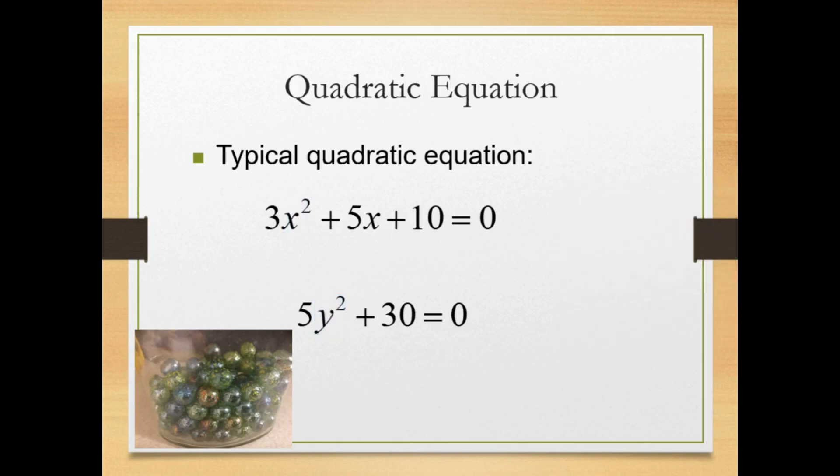To solve these quadratic equations, they will need to be set equal to 0, which is called standard form. Standard form of an equation is where the variable terms are on one side of the equal sign in descending order, and 0 on the other side. We will see that quadratic equations usually have more than one solution.